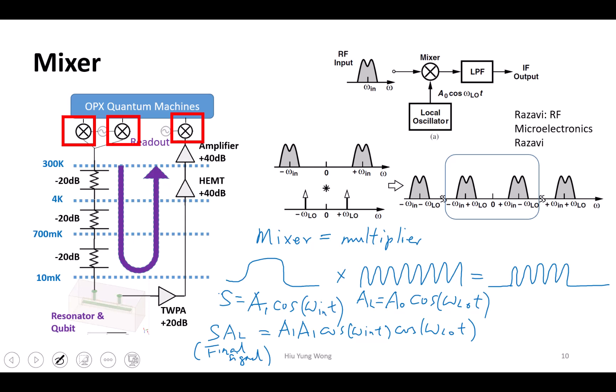How do I do this multiplication? I just need some non-linear elements, for example a diode. Just pass through them. Then the voltage, because it's not linear, you get square terms, cube terms. And if I do filtering, I will just get the lowest frequency one.